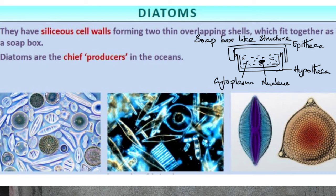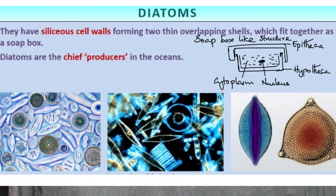The reserve food material in Chrysophytes is oil and a polysaccharide. The polysaccharide is named chrysolaminarin, which is the reserve food material of Chrysophytes. So the two reserve food materials are oil and chrysolaminarin.